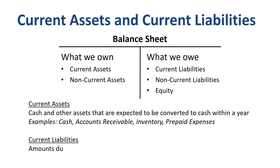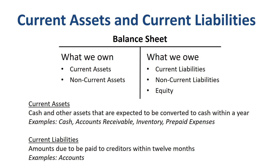Current liabilities are amounts due to be paid to creditors within 12 months. Some examples of accounts in current liabilities are: accounts payable, amounts to be paid to suppliers; accrued liabilities, an expense incurred but not yet paid; and short-term debt. The difference between current and non-current liabilities is whether the amounts are due within one year or further out.